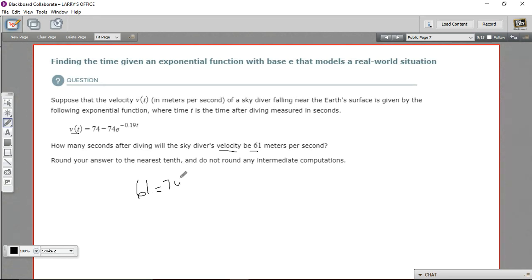61 equals 74 minus 74 e to the negative 0.19 t power. So the first thing we're going to need to do is get this exponential part of it alone on one side of the equation. So I'm going to subtract 74 first to get rid of that number term. So 61 minus 74, that is negative 13. And then we've got negative 74 e to the negative 0.19 times t power here.